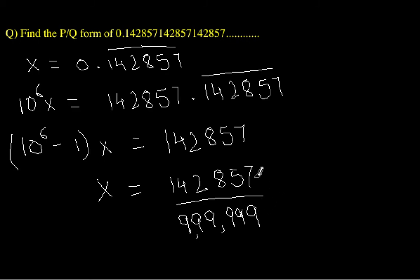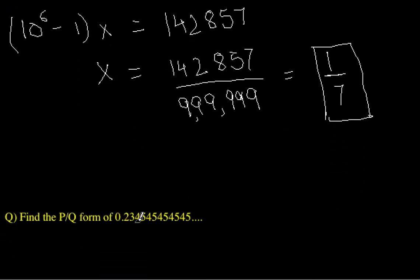Next we write 142857 upon 10 to the power 6 minus 1, which is 999999. If we simplify this, we will see that this is actually a factor of this, and we will get a simplified form of 1 upon 7. This was actually the recurring decimal of 1 upon 7 itself, so 1 upon 7 is the required p upon q form.